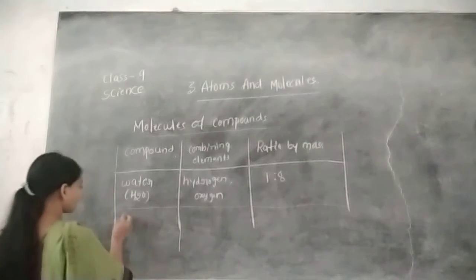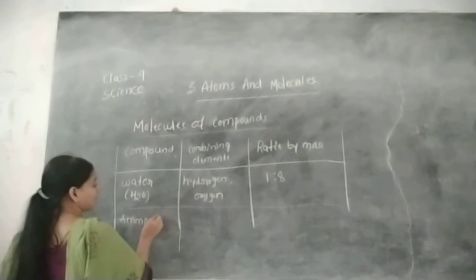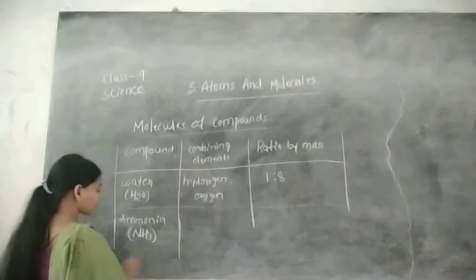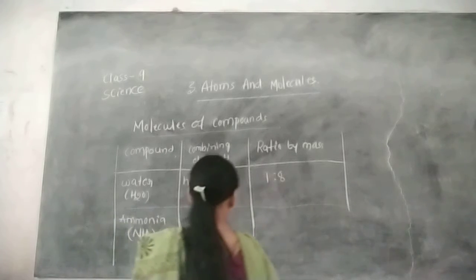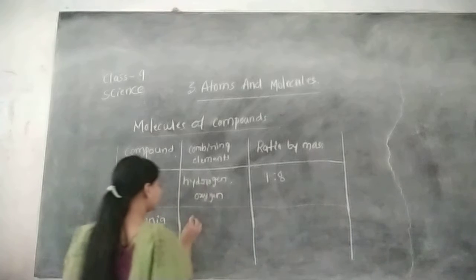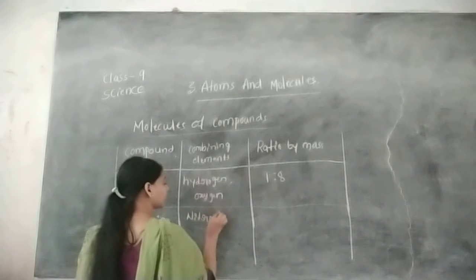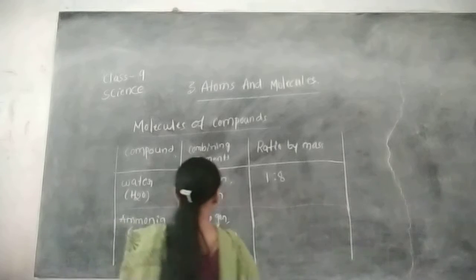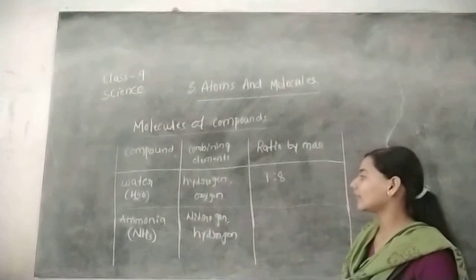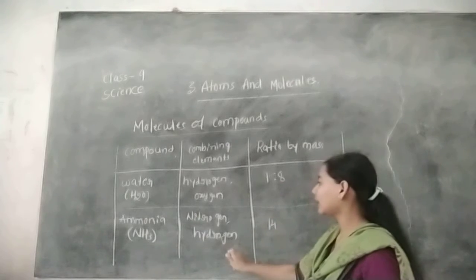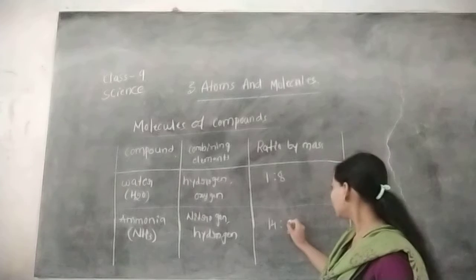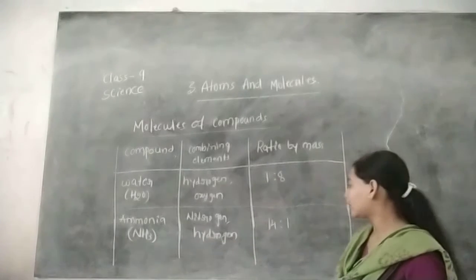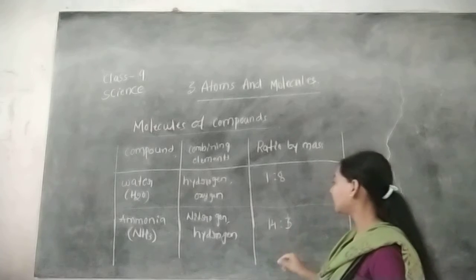Another example is ammonia, that is NH3. Ammonia contains nitrogen and hydrogen. The mass of nitrogen is 14, and hydrogen has a mass contribution of 3, because there are 3 hydrogen atoms, so the mass will be 3.